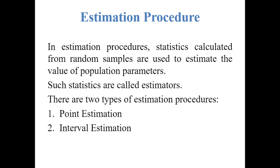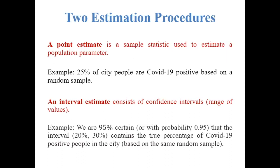In estimation procedure, statistics calculated from random sample are used to estimate the value of population parameters. Such statistics are called estimators. There are two types of estimation procedure: point estimation and interval estimation. In point estimation, we provide a number that represents the value of the unknown parameter. A point estimate is a sample statistic used to estimate a population parameter. For example, 25% of city people are COVID positive based on a random sample — this 25% is a single number representing the estimate of the percentage of COVID positive people in that city.